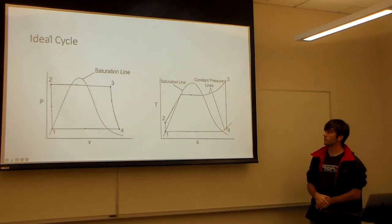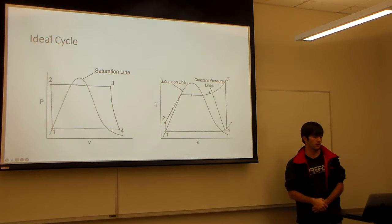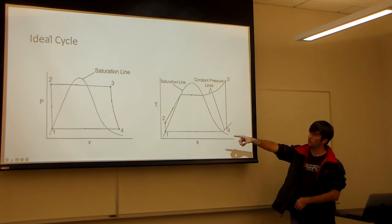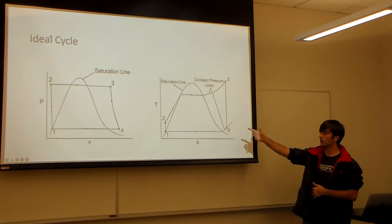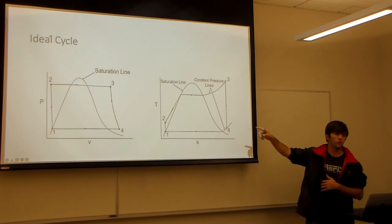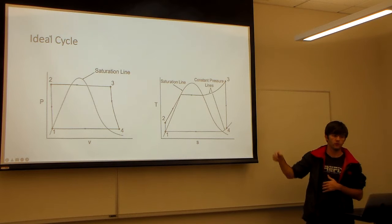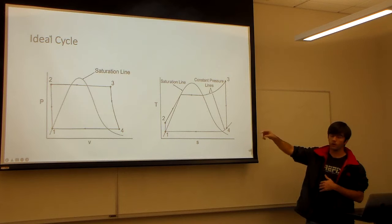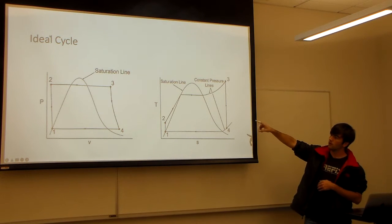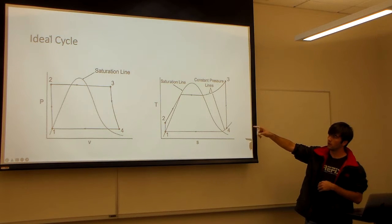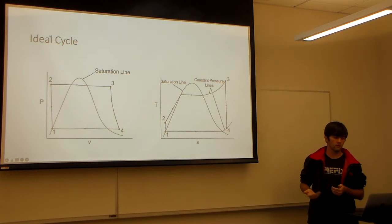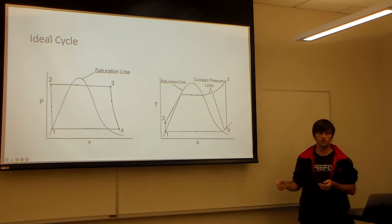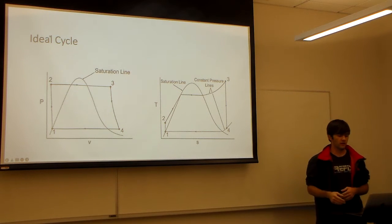I just wanted to quickly explain how the ideal cycle should look for the Rankine Cycle. Basically from 1 to 2 on the PV diagram, 1 to 2 is the work done by the pump to raise the pressure. 2 to 3 is the boiler heating up the water into a vapor. 3 to 4 is the turbine with the work output. And then 4 to 1 would be the condenser cooling the steam back into a liquid.